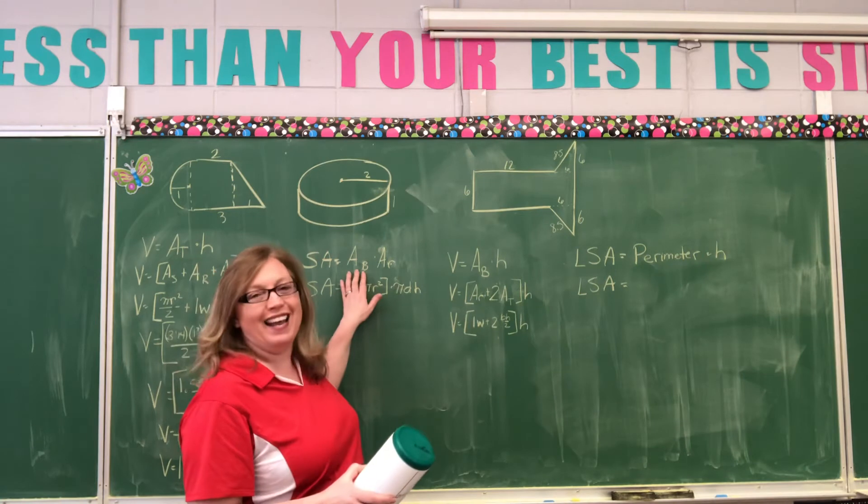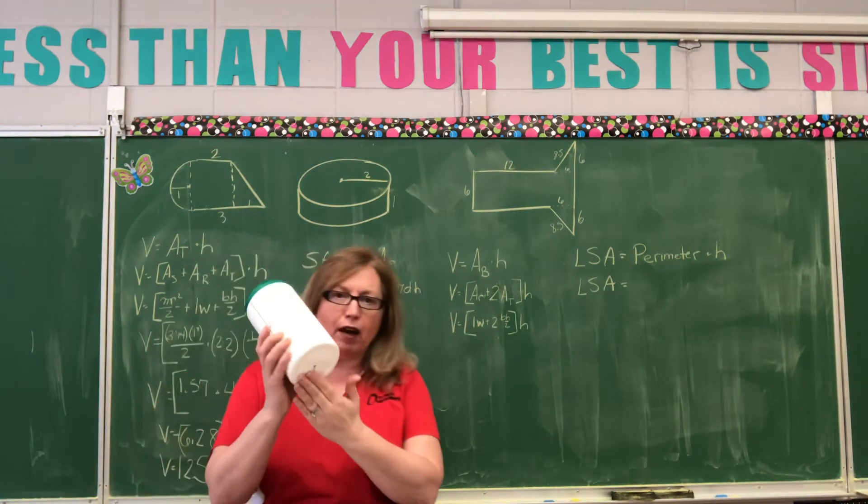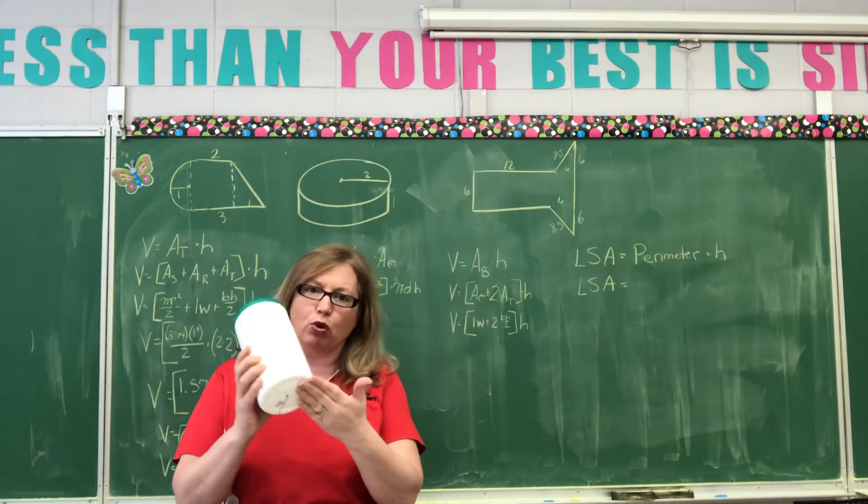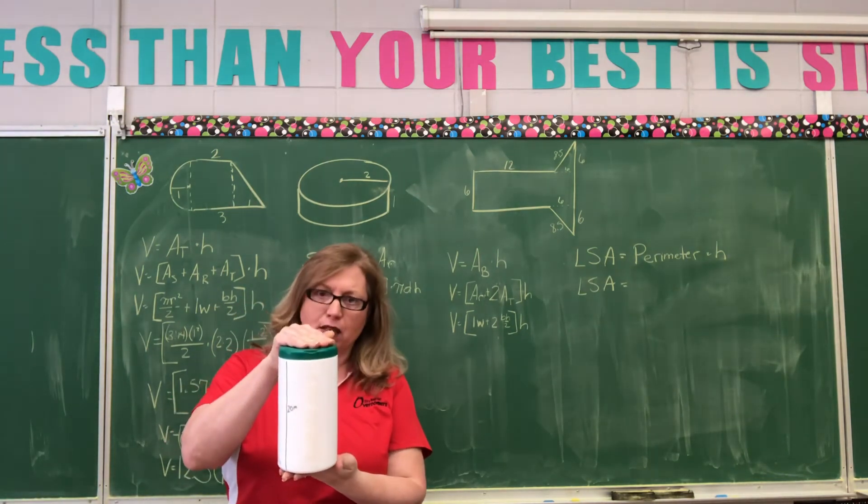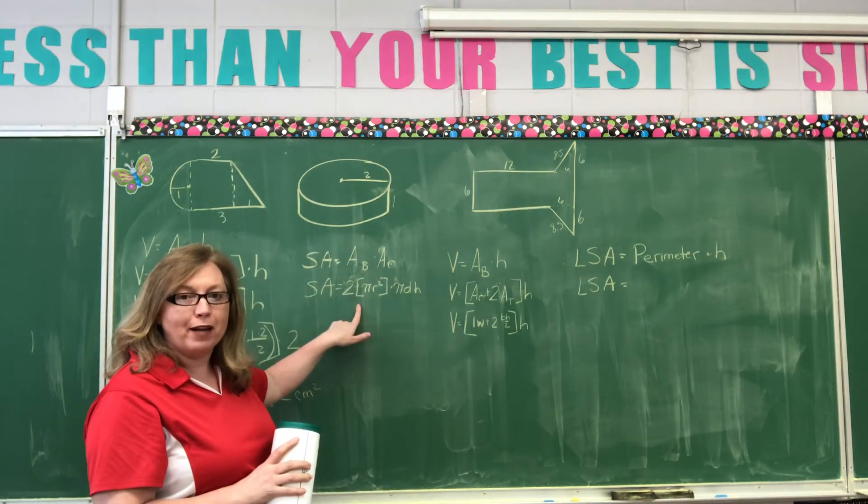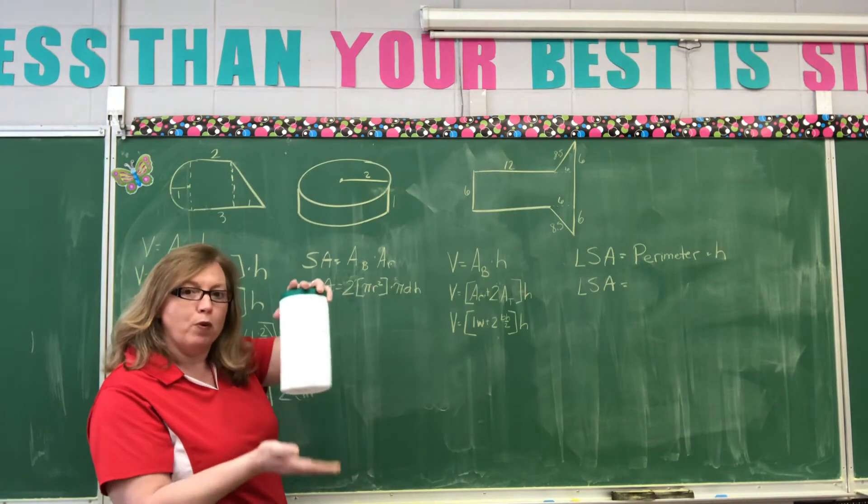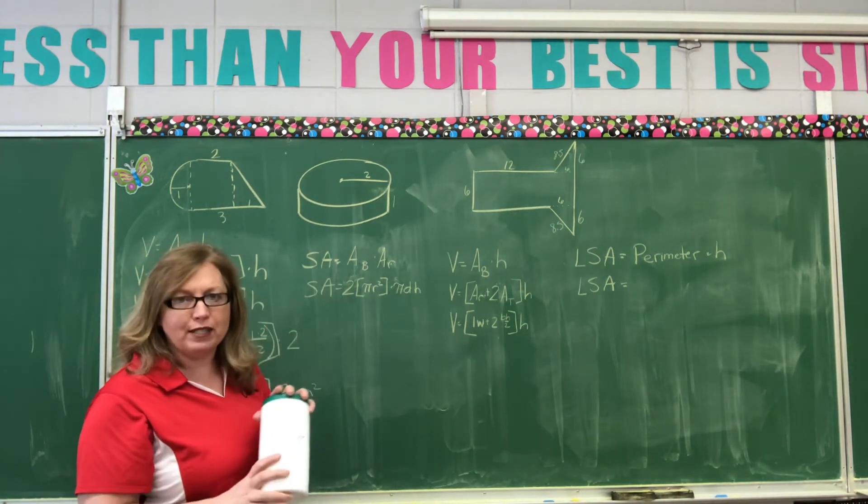We're going to find the area of the base. That's the area of this round circle. The top and the bottom are the same. Correct? Since they are the same and we're finding surface area, that's why we're going to multiply by 2. One for the top, one for the bottom. So, our top and our bottom have the same surface area.